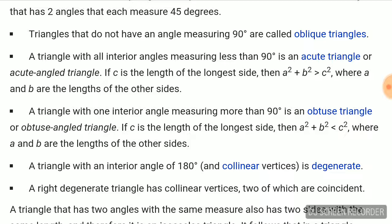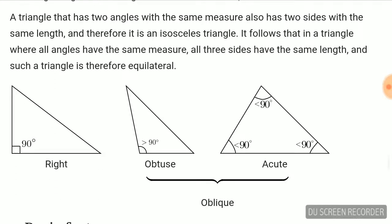Triangles that do not have an angle measuring 90 degrees are called oblique triangles. A triangle with all interior angles measuring less than 90 degrees is an acute triangle or acute angle triangle. A triangle that has two angles with the same measure also has two sides with the same length and is therefore an isosceles triangle. It follows that in a triangle where all angles are the same measure, all three sides are the same length and such a triangle is therefore equilateral.